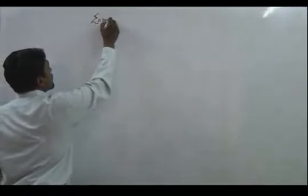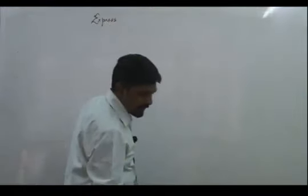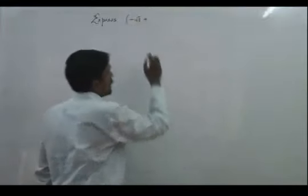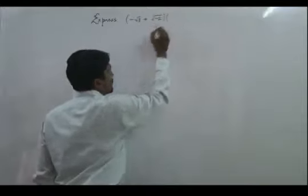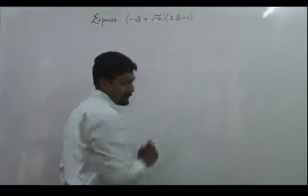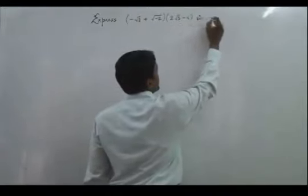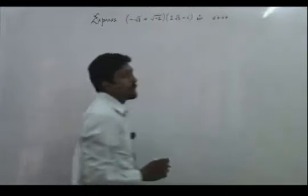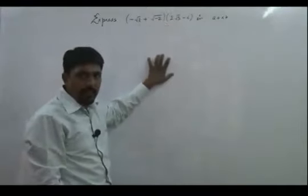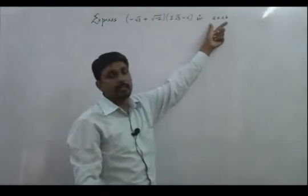Today we will take some questions based on complex numbers. The question is: express (-√3 + √(-2)) multiplied by (2√3 - i) in the form a + ib. We have to simplify the product of these two and convert it into the form a + ib.